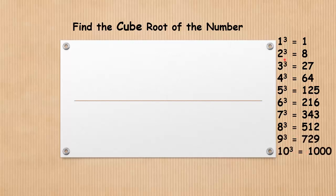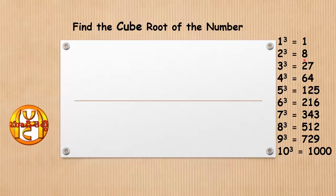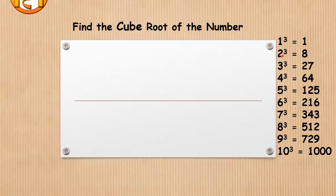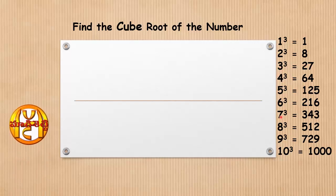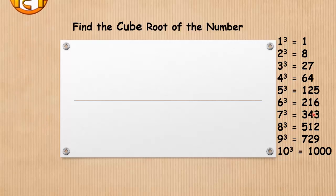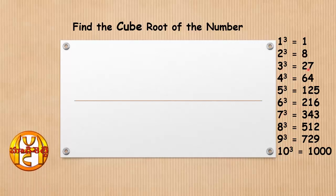In these cube values, if you observe, 2 cube has its units place 8, and similarly 8 cube has its units place 2. So 2 cube has 8 and 8 cube has 2 in its units place. Also, 3 cube has 7 in its units place and 7 cube has 3. So we treat them as conjugate pairs: 2 and 8 as one pair, 3 and 7 as another pair.